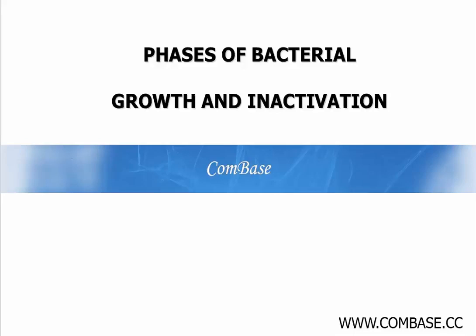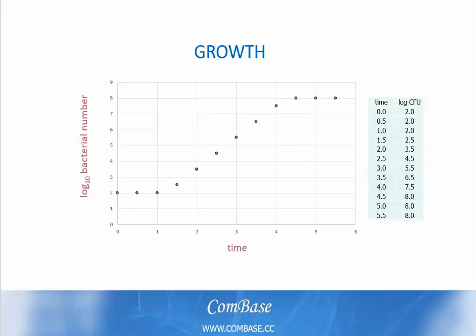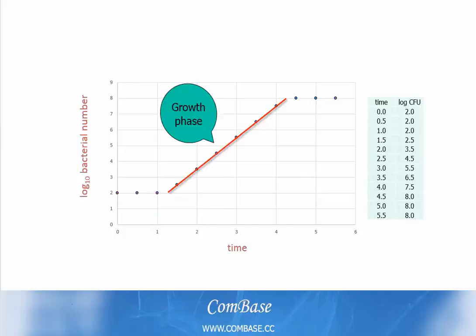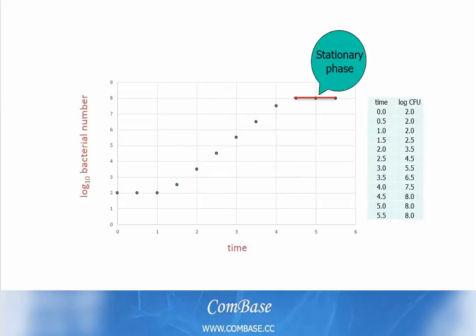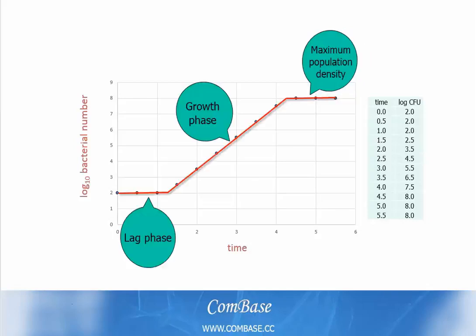This video explains the different phases of bacterial growth and inactivation. In cases of bacterial growth, we typically see three phases: the lag phase, the growth phase, and the stationary phase, which is sometimes referred to as the maximum population density, or MPD. However, the bacterial growth phases are not simply linear lines with sharp intersections.